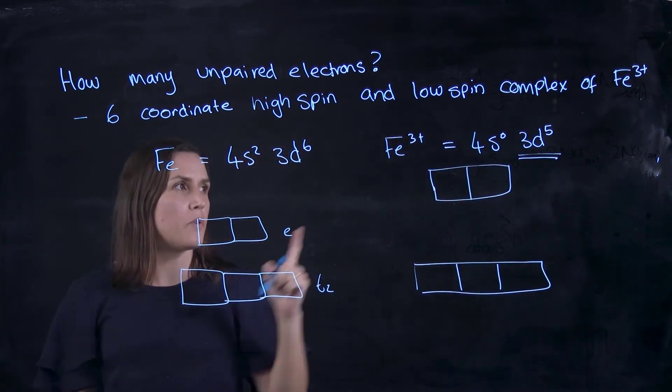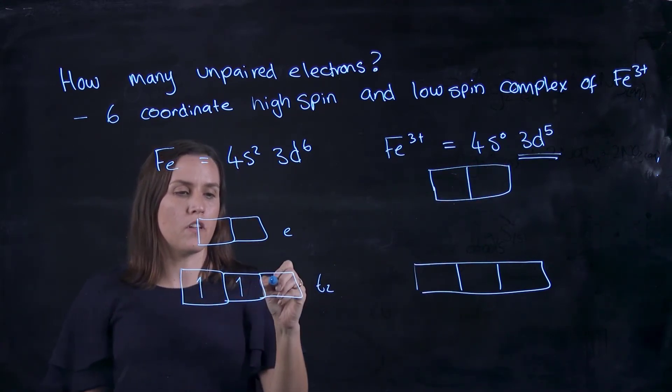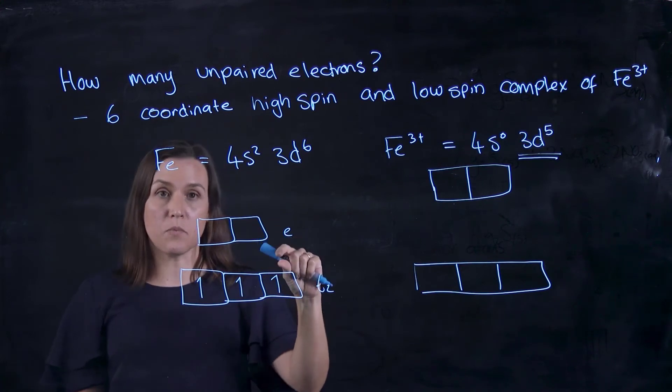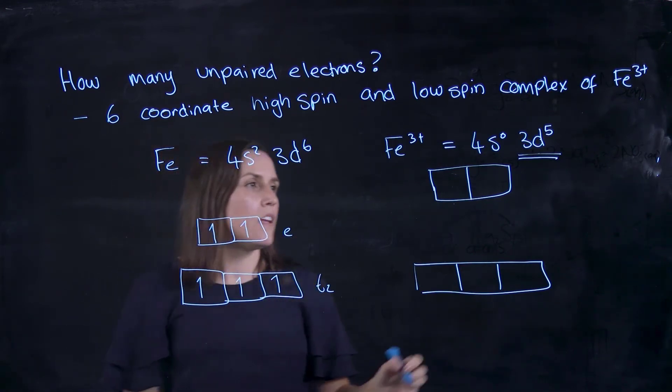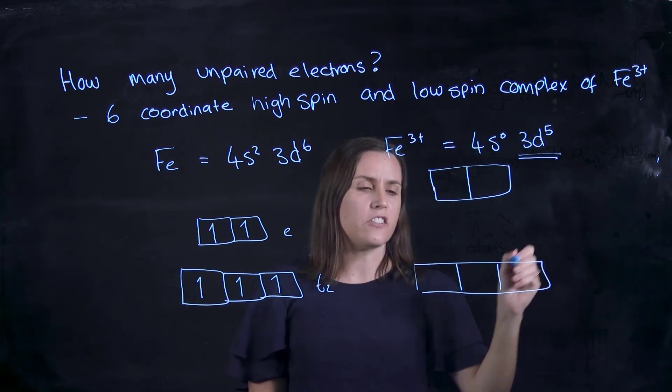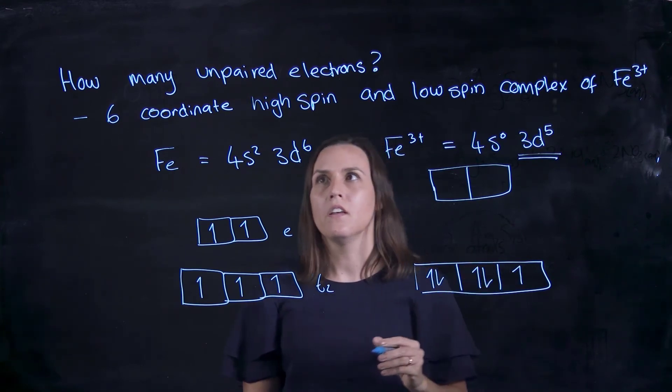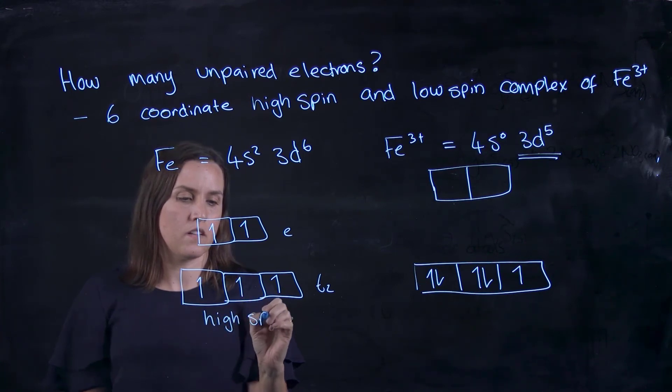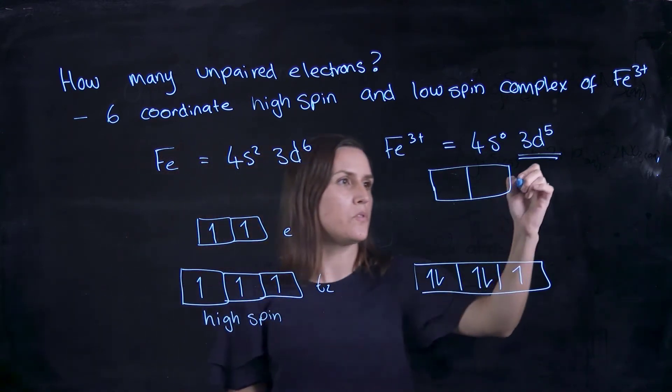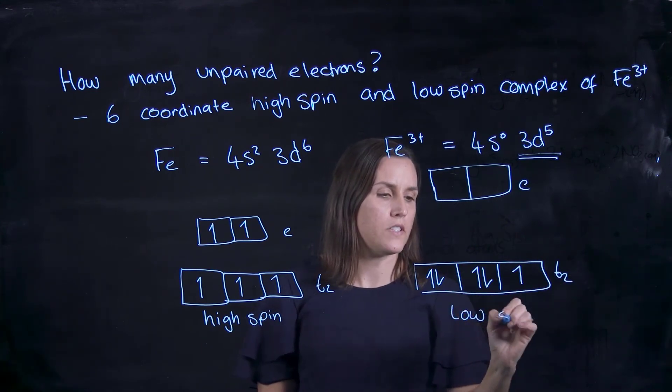Following our rules, we're putting in 5 electrons. So it would be 1, 2, 3. It's got a small energy gap so it can start filling up the top ones as well. And now we've got that larger energy gap. So we've got 1, 2, 3, 4, 5. So this would be my high spin and this would be my low spin.